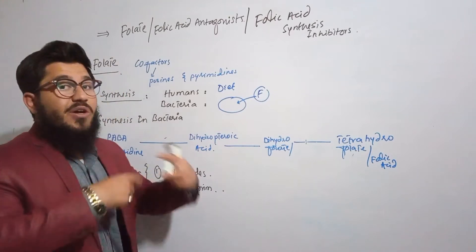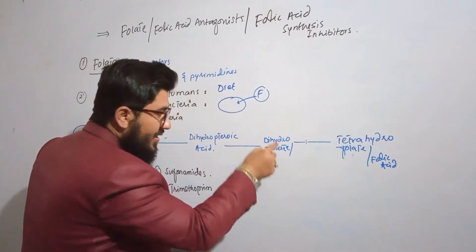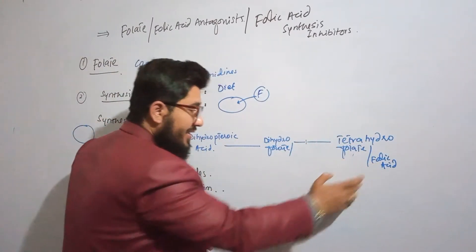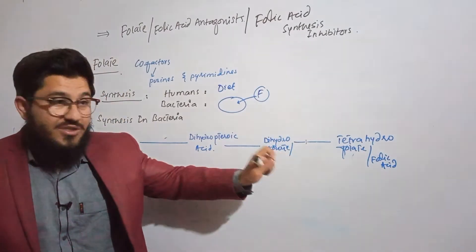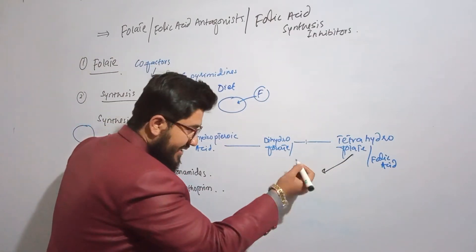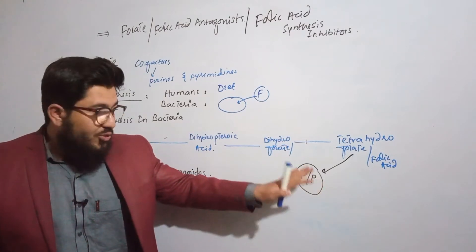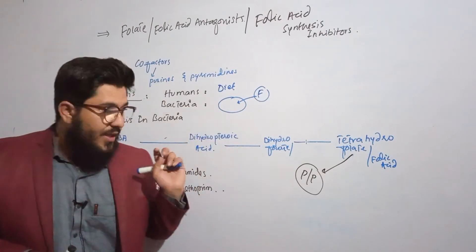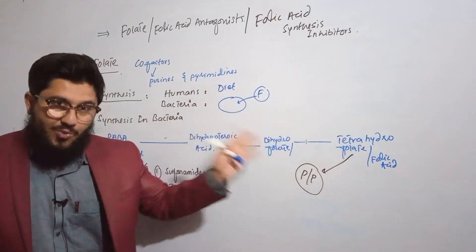Then dihydropteroic acid will be converted into dihydrofolate, also known as dihydrofolic acid, by means of another enzyme. Again, this dihydrofolate is supposed to be converted into tetrahydrofolate or tetrahydrofolic acid by means of another enzyme. Now this tetrahydrofolate is free to do its job — it will start its function to synthesize purines and pyrimidines, acting as a cofactor.